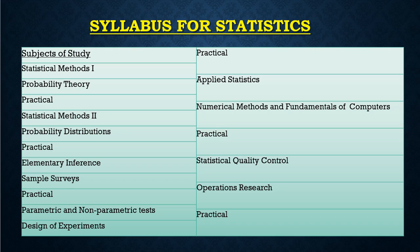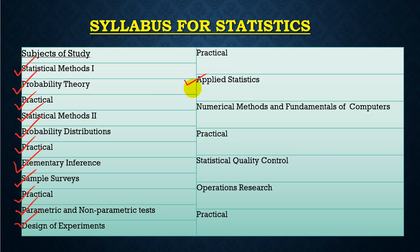The basic syllabus covers: Year 1 — statistical methods, probability, and practical. Year 2 — statistical methods II, probability distributions, and practical. Year 3 — elementary inference, sample surveys, practical, parametric and non-parametric tests, and design of experiments. The practical component comprises applied statistics, numerical methods, statistical quality control, and operations research.